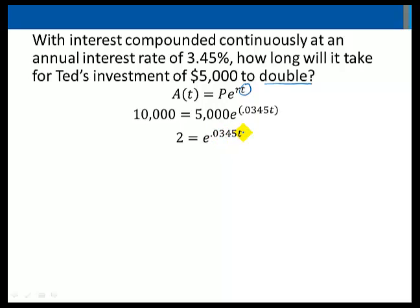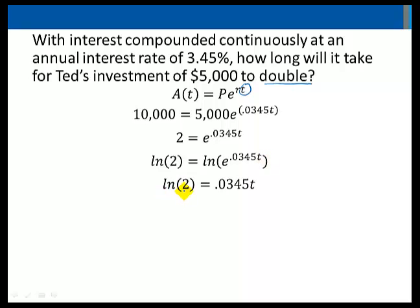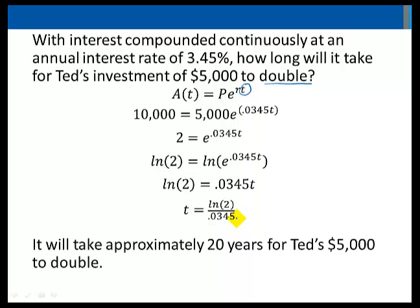Taking the natural log of each side, the right side simplifies to just 0.0345T. So we have the natural log of 2 equals 0.0345T. Dividing through by 0.0345 gives T equals the natural log of 2 divided by 0.0345. Through a calculator, it will take approximately 20 years for Ted's $5,000 to double.